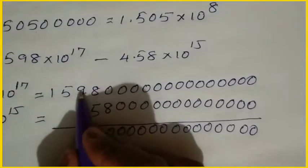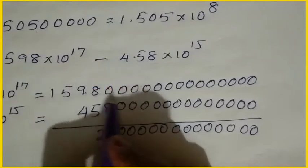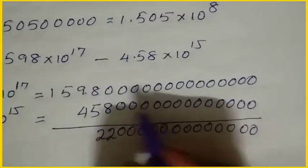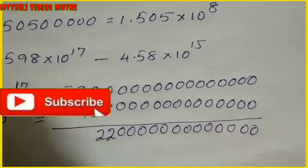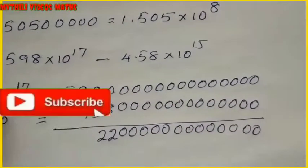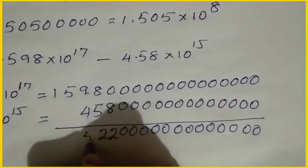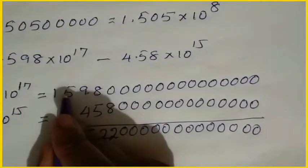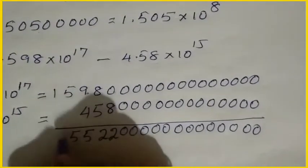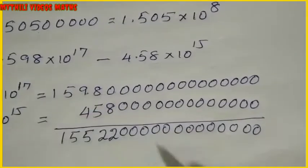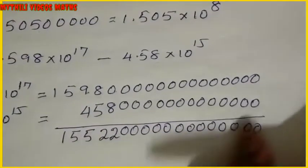We continue with 8, 8, 4, then 9, 4, 5, and then 5. The remaining digit is 1. So we have 155 at the end of that number. This much of a number is there — now we have to write it in scientific notation.